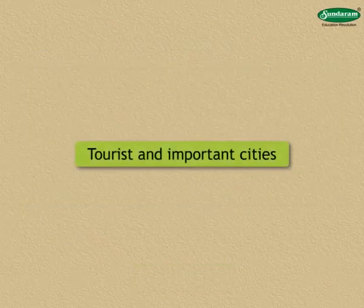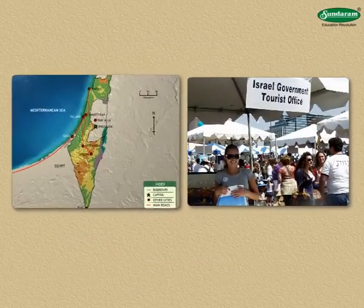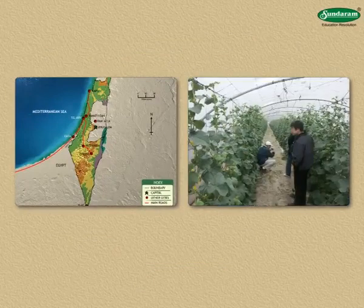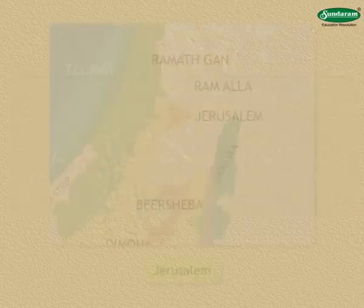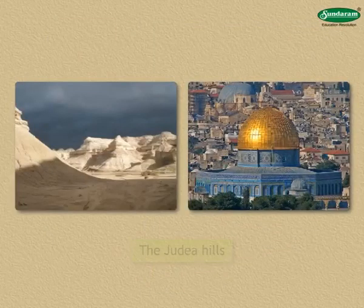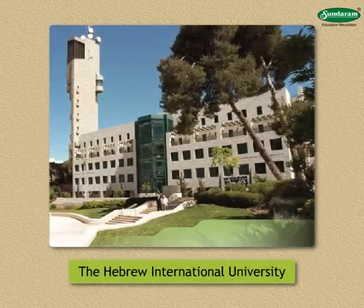Many tourists visit this country, especially to see agriculture-related experiments. Jerusalem is the capital of Israel. This city is situated on the Judea hills. There are many religious places here, and the Hebrew International University is also located in this city.